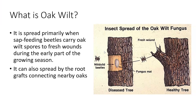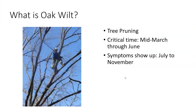Oak wilt can also spread through root grafts, which can connect to nearby oaks. If you have one dead tree confirmed with oak wilt, the surrounding oaks may be threatened in the long run. Since it's transmitted by insects through fresh wounds, it is very critical to control pruning time. I would say mid-March through June is the critical period — please do not prune your oak tree during that time.